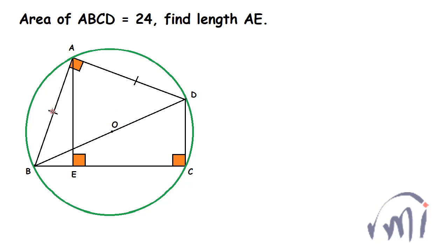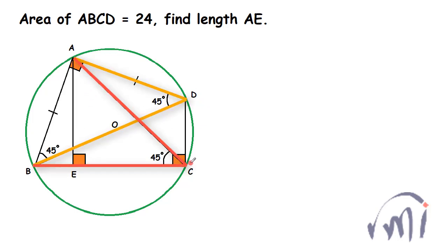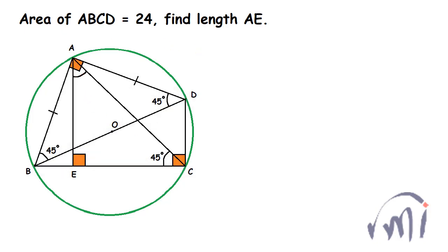Triangle BAD is a right angle triangle and it is also an isosceles triangle because AB is equal to AD, which means both base angles will be equal to 45 degrees. If we draw a line from point C to point A, the angle ACB will also be equal to 45 degrees. Why? Because angle ADB and angle ACB are both subtended by the same arc AB, so both these angles are equal.